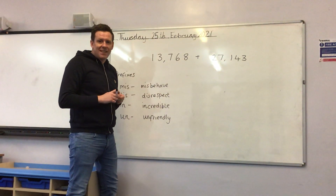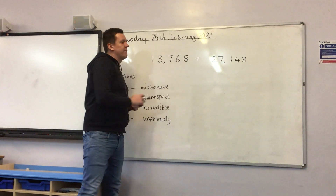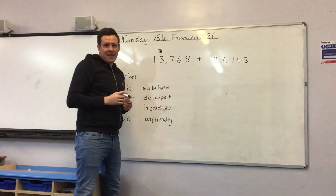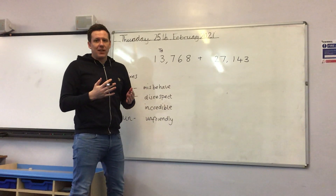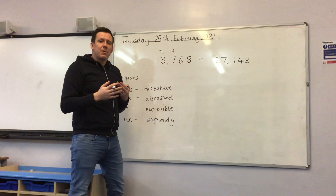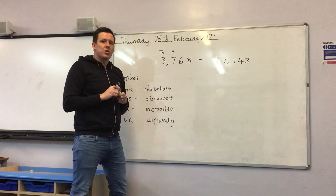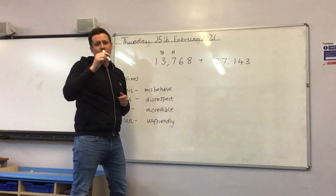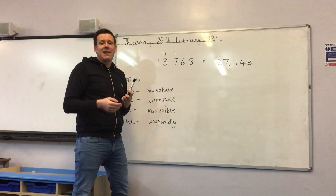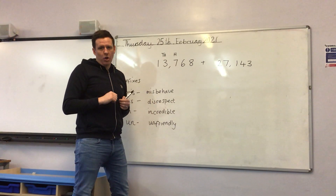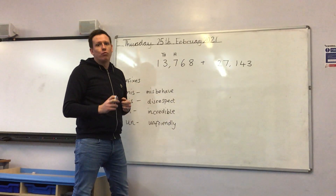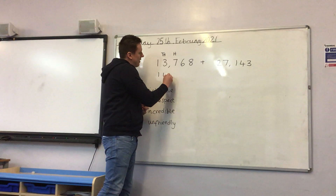If you have 13,768 add 27,143, you can check your answer before you've even worked it out to check the accuracy, and you do this by rounding. So in this case, we're going to round to the nearest thousand. So 13,768 — I'm going to look at my thousands, but remember Year 5, I also need to look to the next place value column. I need to look to my hundreds, and we need to decide whether we're going to round up to the next thousand, which would be 14,000, or down to the thousand that it's on, which is 13,000. And of course, the rule is that if it's five or above, you always round up; four and below, you round down. Here we have a seven, so I'm going to round my number up to 14,000.